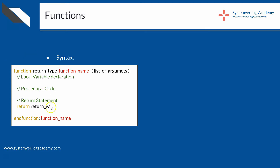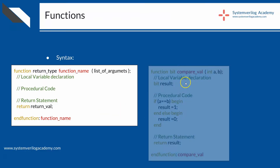Finally, you specify the value returned by the function, which should match the return type specified in the first statement, using the keyword return. Here is an example. The function name is compareVal and its return type is bit. It has two formal arguments a and b, which are of type int. Here is the local variable declaration and here is the functional description.